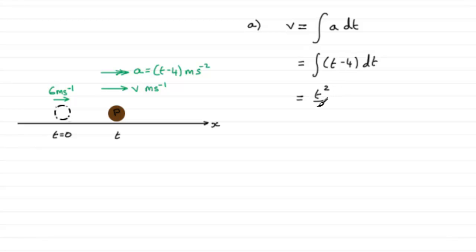If we integrate this in the normal way where we add 1 to the power and divide by the new power, we get t² over 2. Then for a constant you just put a t on the end, so it's minus 4t. But we've got to be very careful to remember the constant of integration. I'm going to call it c and call this equation 1.